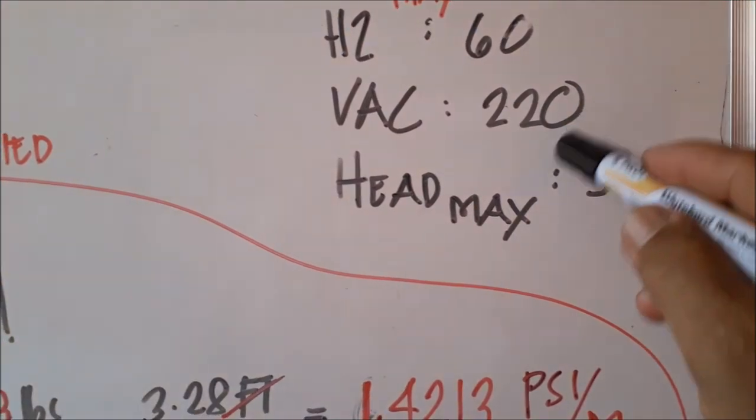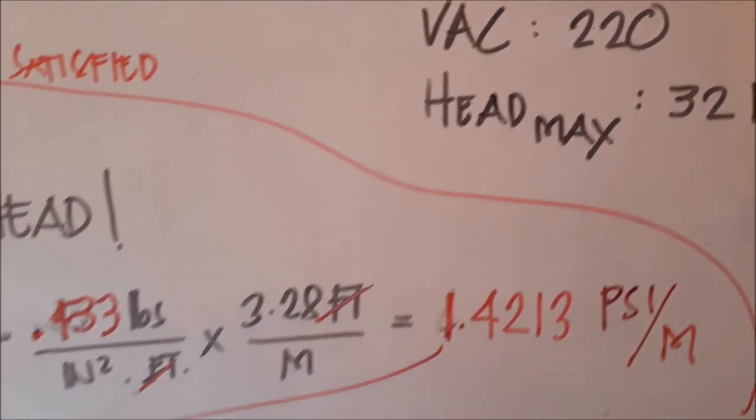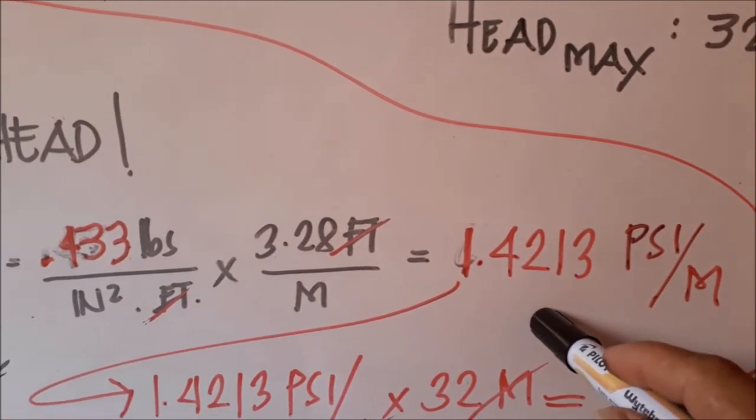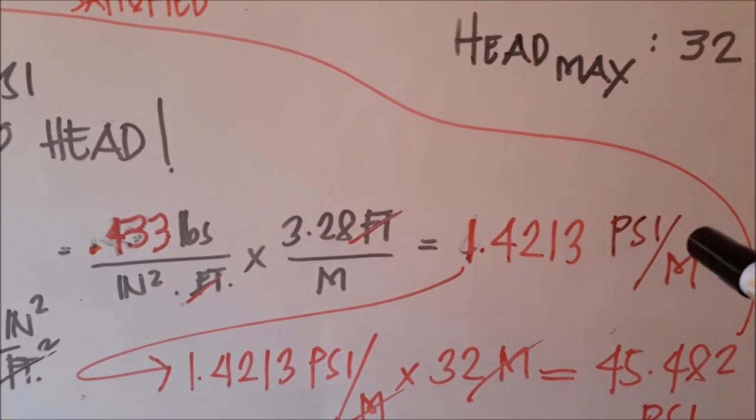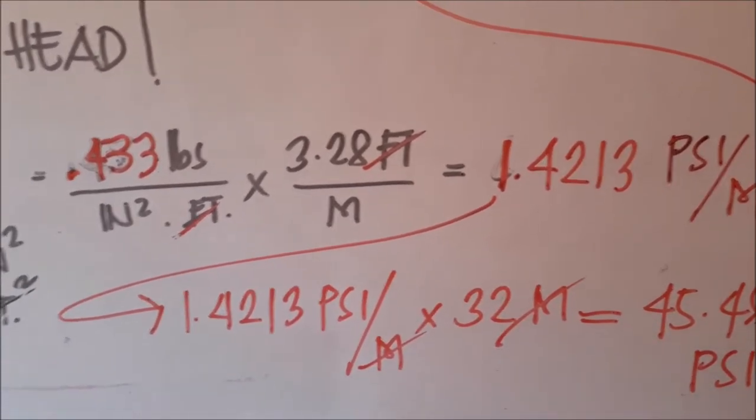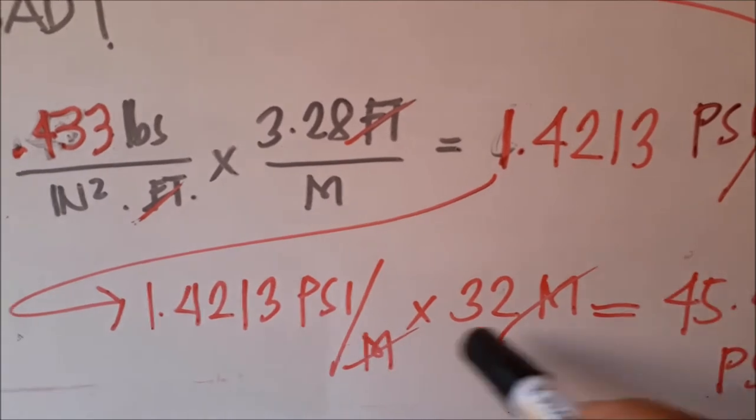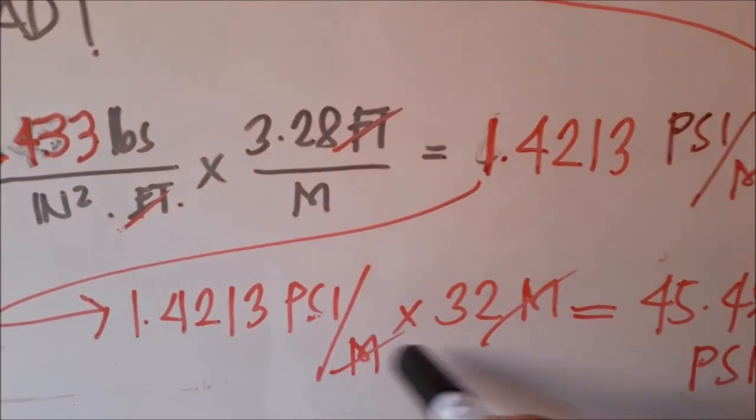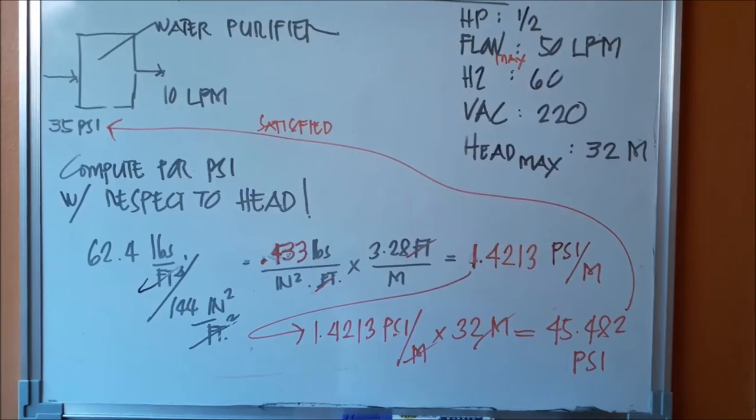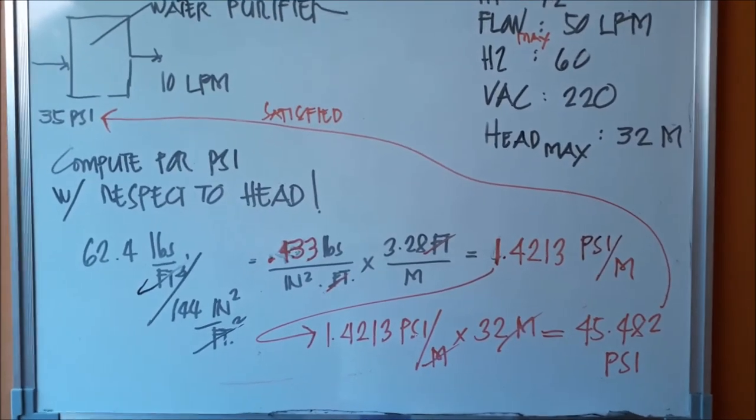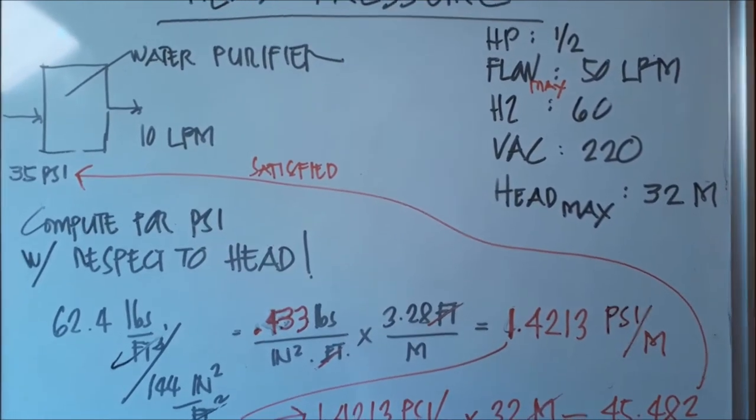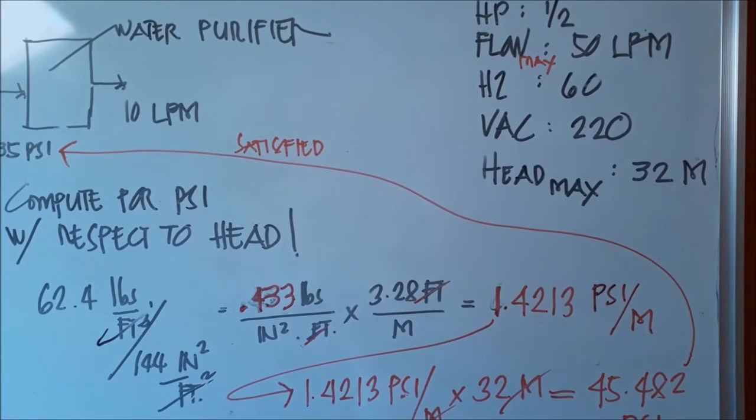Now let's find out the pressure at the base of the column if we have 32 meter head of water column. Let's use 1.4213 PSI per meter, multiply it by 32 meters. Cancel the meters, leaving PSI, equivalent to 45.482.